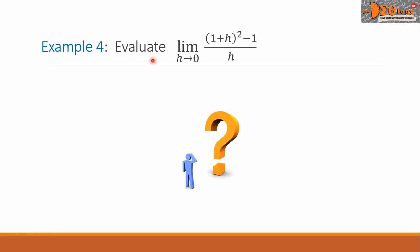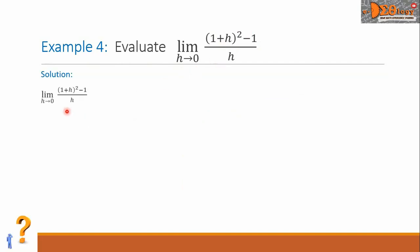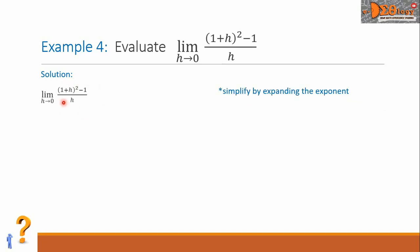Example 4: evaluate the limit of the function — the quantity 1 plus h, squared, minus 1, all over h — as h approaches 0. Let us copy this function. Note that when we substitute 0 to h, we will get 0 over 0, which is an indeterminate form. So we are going to simplify first by expanding that exponent, using the special product formula to expand the quantity 1 plus h squared.